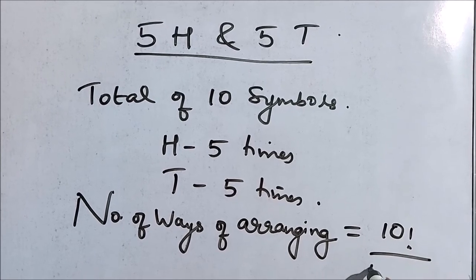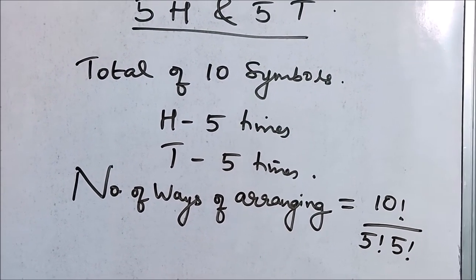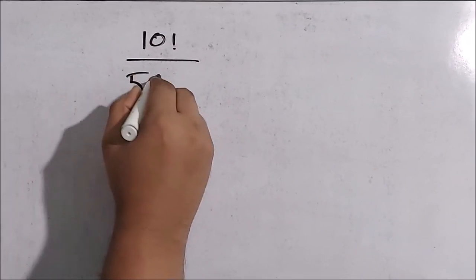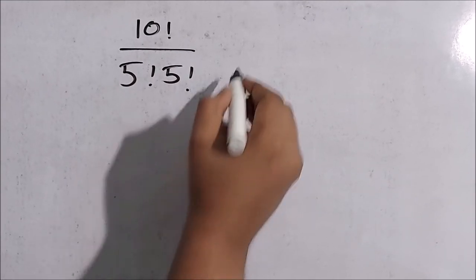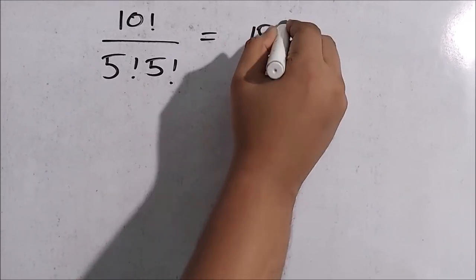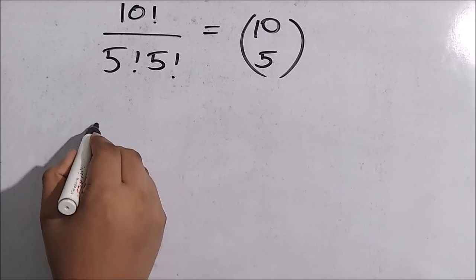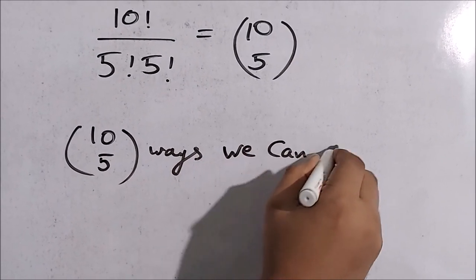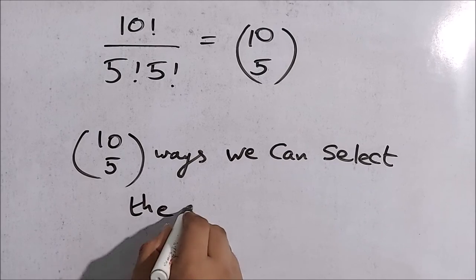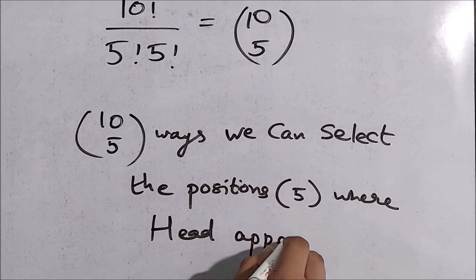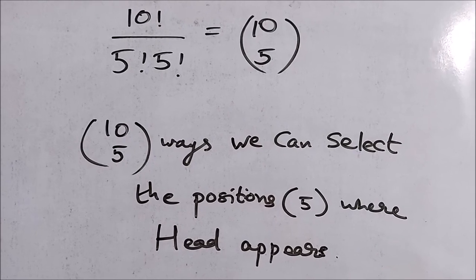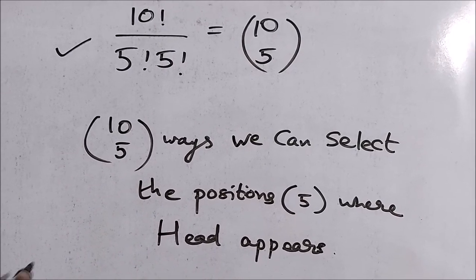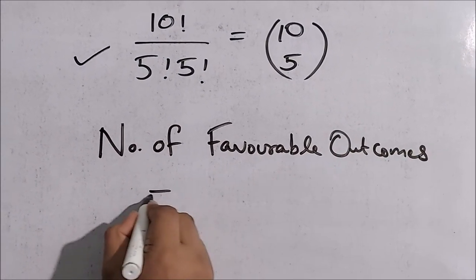The number of ways of arranging that is 10 factorial divided by 5 factorial times 5 factorial. When we view this as an arrangement problem, the number of favorable outcomes is 10 factorial by 5 factorial into 5 factorial, which is 10 choose 5. We can also view it as a combination problem — in 10 choose 5 ways we can select the positions where heads appear, and tails automatically fill the rest. So the number of favorable outcomes is 10 choose 5.